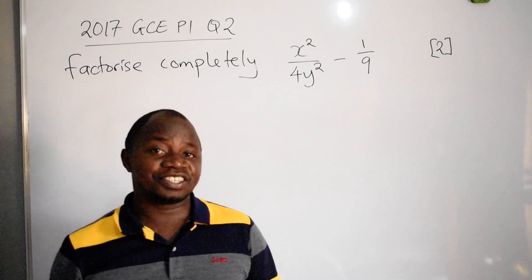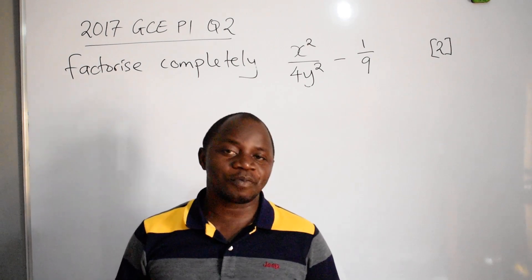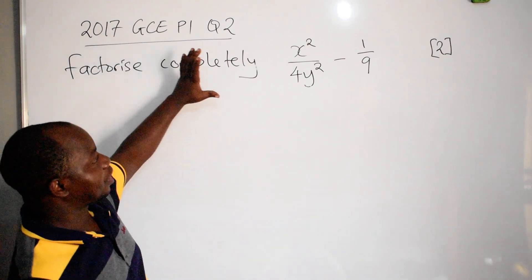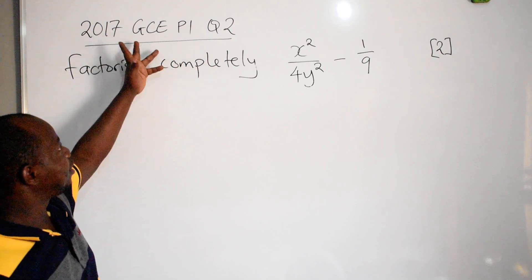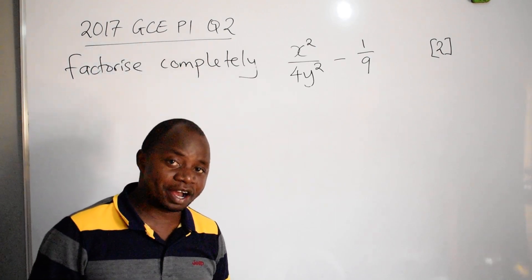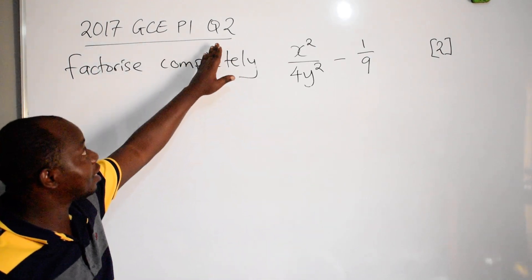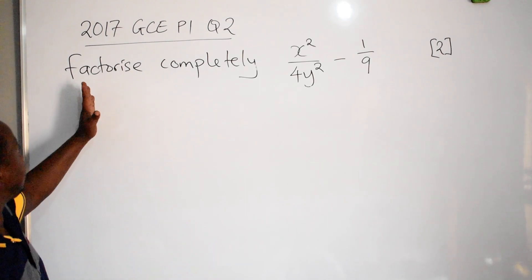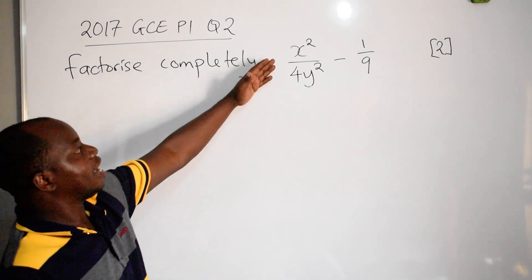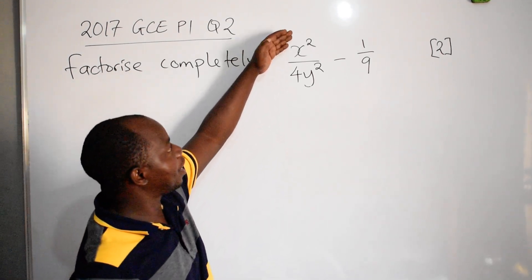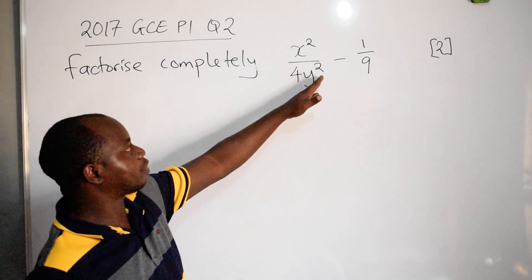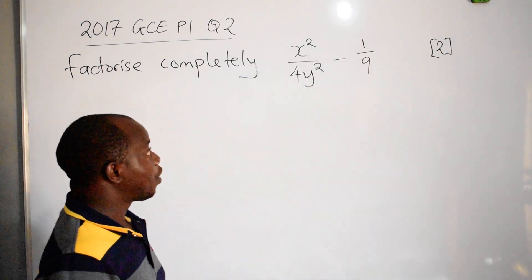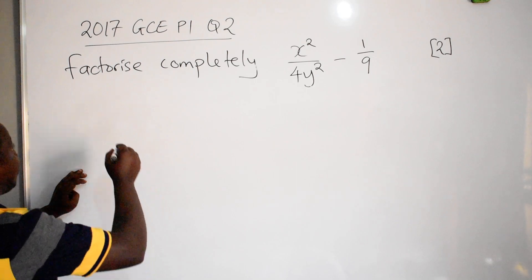Greetings ladies and gentlemen, hope you are doing well. With me is a question coming from the 2017 GCE paper 1, question number 2. The question reads: factorize completely x squared over 4y squared minus 1 over 9.